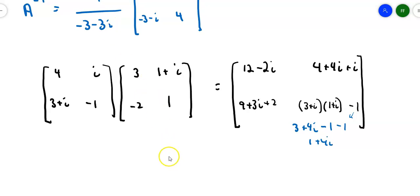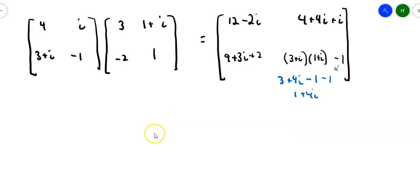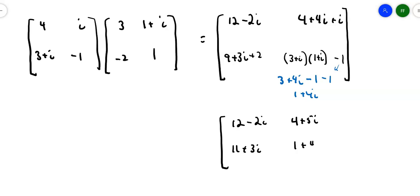So simplifying everything in a plus bi form: top left is 12 minus 2i, top right is 4 plus 5i, bottom left is 11 plus 3i, and bottom right is 1 plus 4i. You can take the product of two complex matrices just like with real number terms — the only thing to remember is the powers of i and combining like terms.